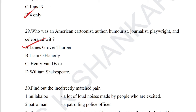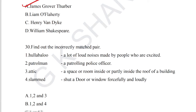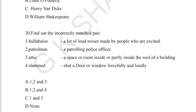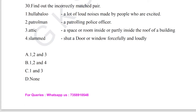Question number 29: who was an American cartoonist, author, humorist, journalist, playwright, and celebrated wit? The answer is James Grover Thurber — James Grover Thurber was an American cartoonist, author, humorist, journalist, playwright, and celebrated wit.